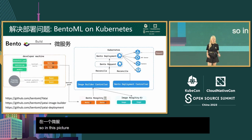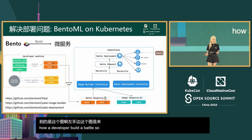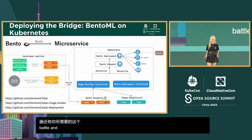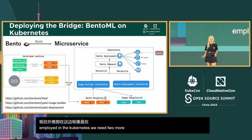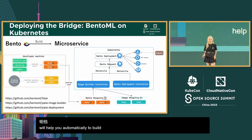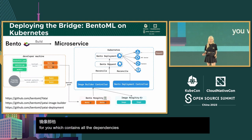The left side of this picture depicts how a developer builds a Bento. The simplest Bento consists of a bentofile.yaml, a service.py containing your API server and runner, and the models you need. We can then build it into a Bento and push it to the registry. To deploy in Kubernetes, we need two more controllers in the cluster. The first is an image builder controller that watches a custom resource called BentoRequest and automatically builds your Bento into an image — generating a Dockerfile with all your dependencies by default.